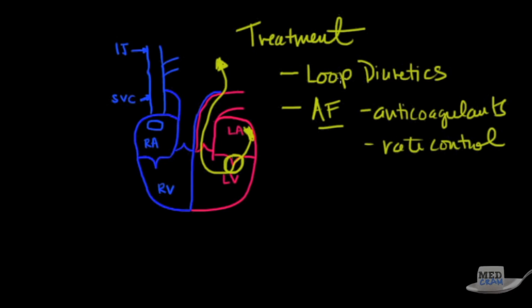Sometimes you can do balloon valvuloplasty where you go with a balloon and open this area up. That's usually effective if there's no calcification of the valve. If there is regurgitation in addition to stenosis, then you want to go with valve replacement. You can do balloon valvuloplasty or mitral valve replacement.